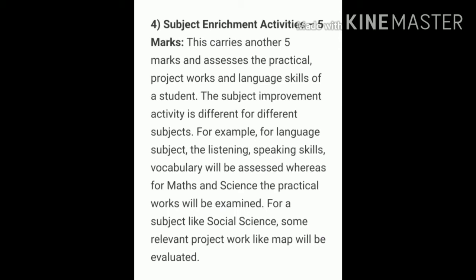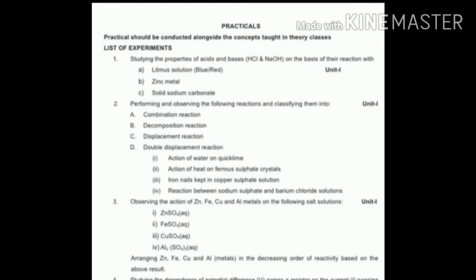In subject enrichment activity, you have 5 marks for practicals in science. You will write the record notebook and then do the practicals at school. In total you have 3 practicals in chemistry, 2 in biology, and 4 in physics. For chemistry: the first one is studying the properties of acids and bases; the second is performing and observing reactions — combination, decomposition, displacement, and double displacement.